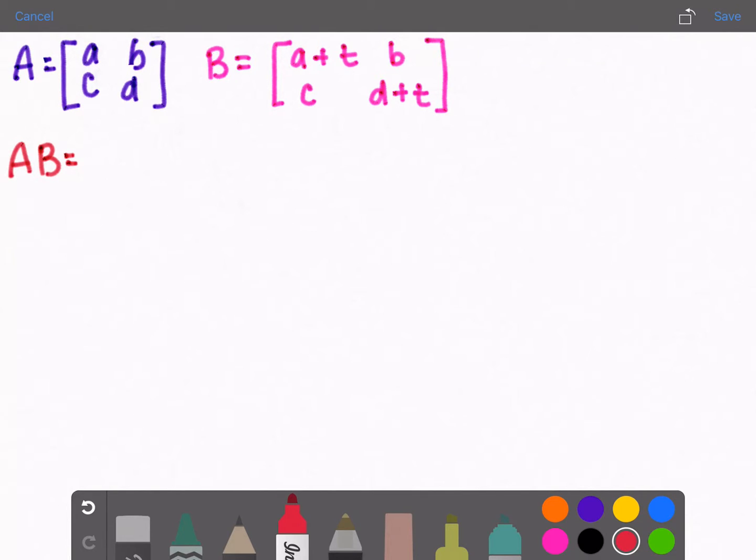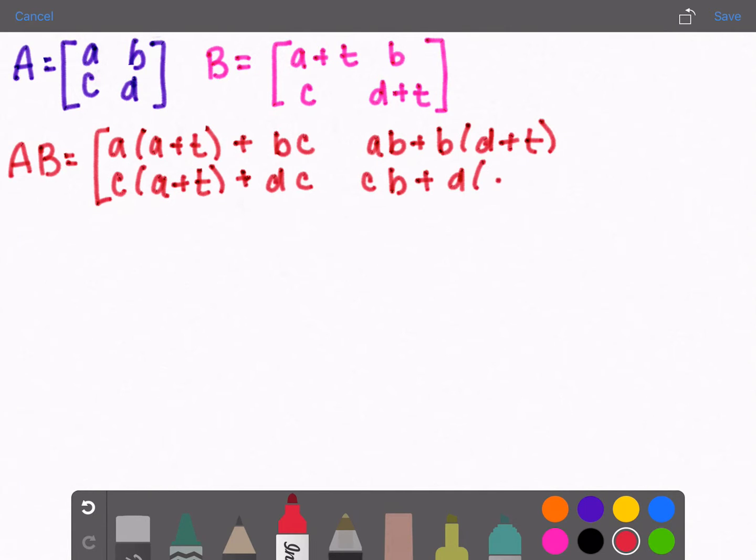To do that we will get A times A plus t plus B times C. So that's just the first term. Our AB will be a 2 by 2 matrix. Then our first row, second column will be AB plus B times D plus t. And then we have C times A plus t plus D times C, and C times B plus D times D plus t.